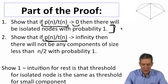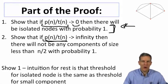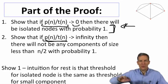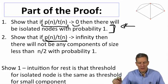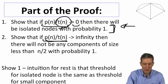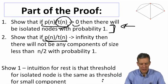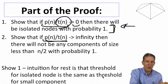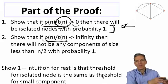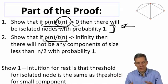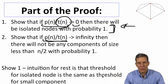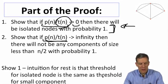The idea here is to show that if you're much smaller than this threshold, you're going to get isolated nodes, and if you're much bigger, you're not going to get any isolated components. I'll concentrate on showing that there are or aren't isolated nodes at this threshold, since showing that a small component can or cannot exist is more or less just a small variation on this proof.